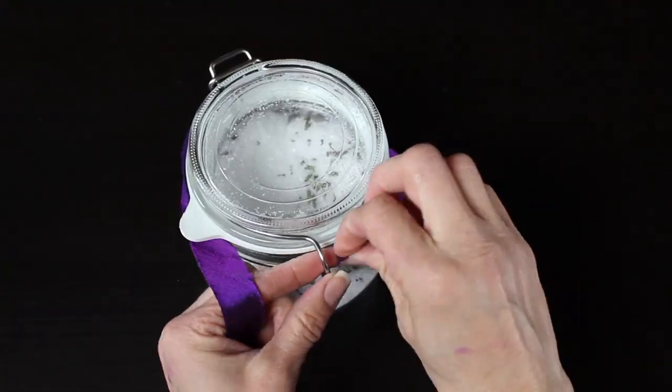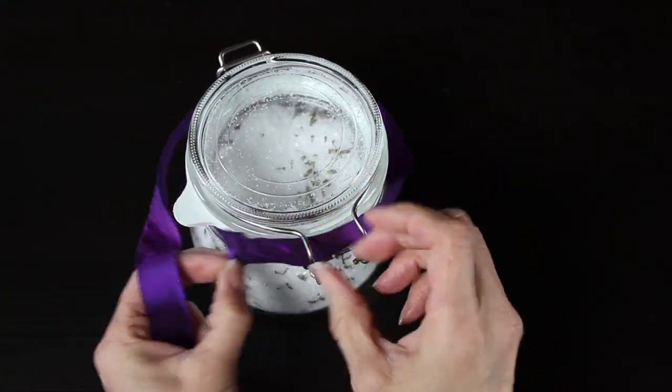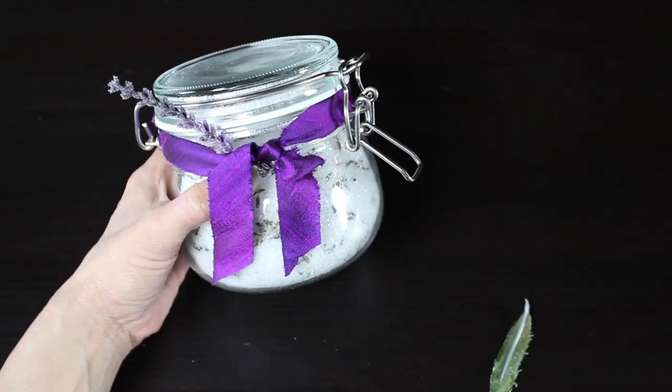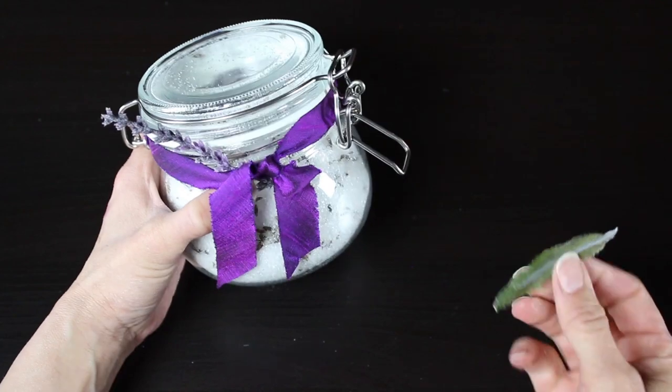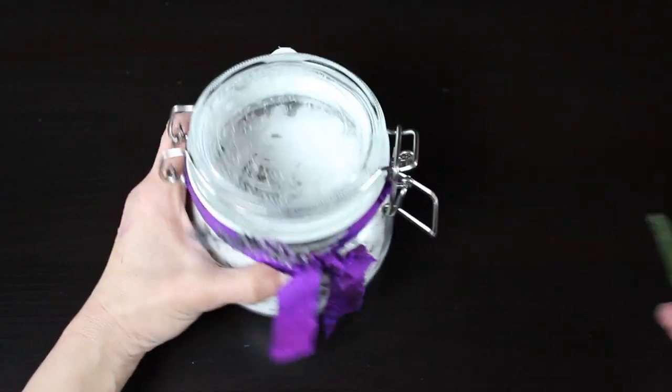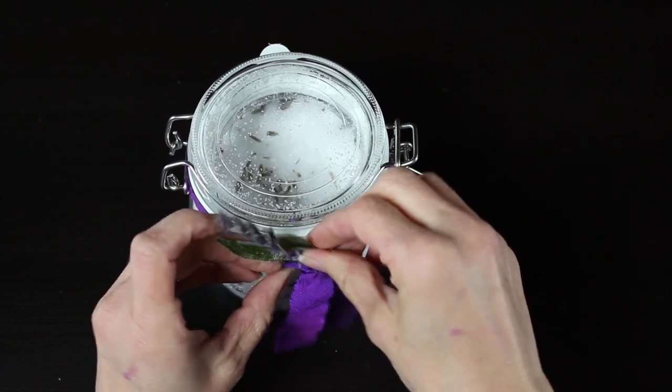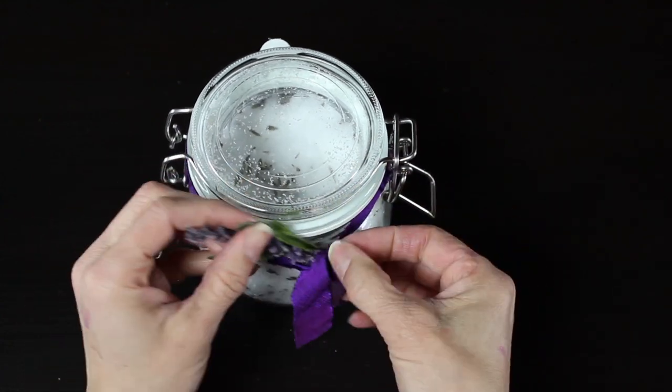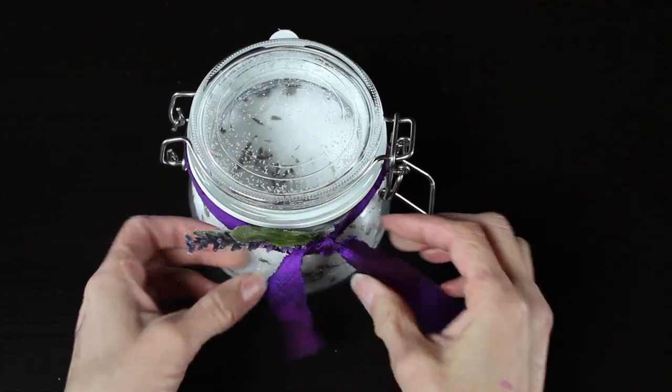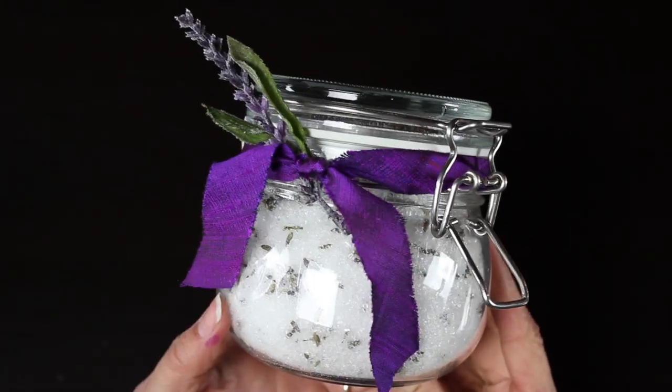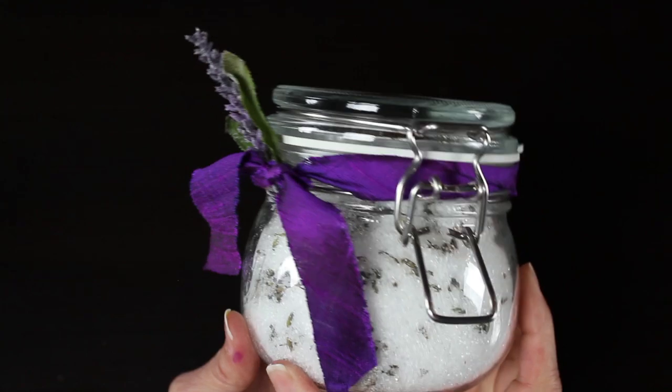Because this is a gift, I grabbed a piece of purple ribbon and I tied it around the front. And then I grabbed a little sprig of lavender and kind of slid that right into the top. And you can see I have this beautiful, very easy, very simple to make homemade gift for Mother's Day. And I'm really excited to give it to my mom because I know she will absolutely love it.